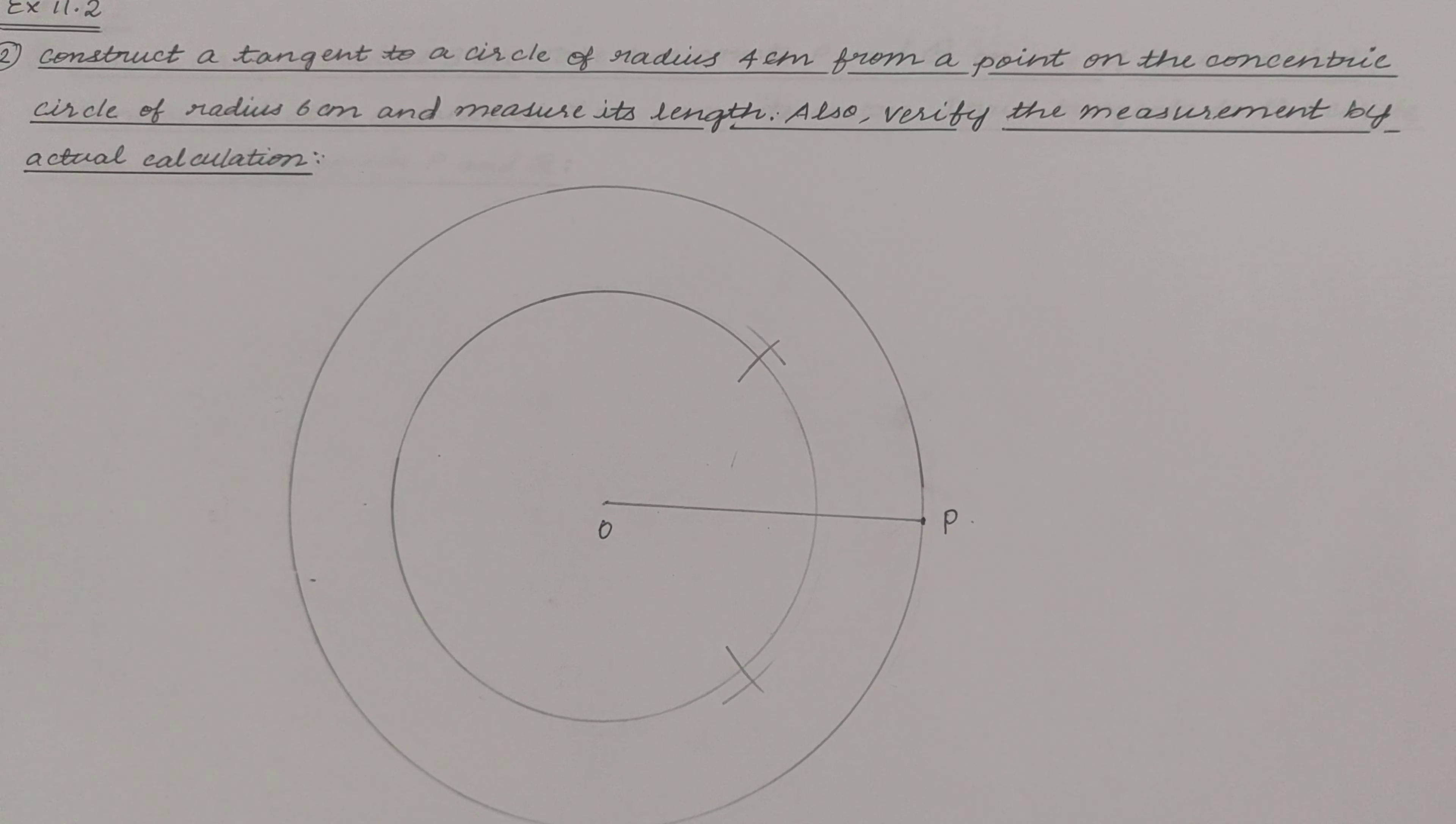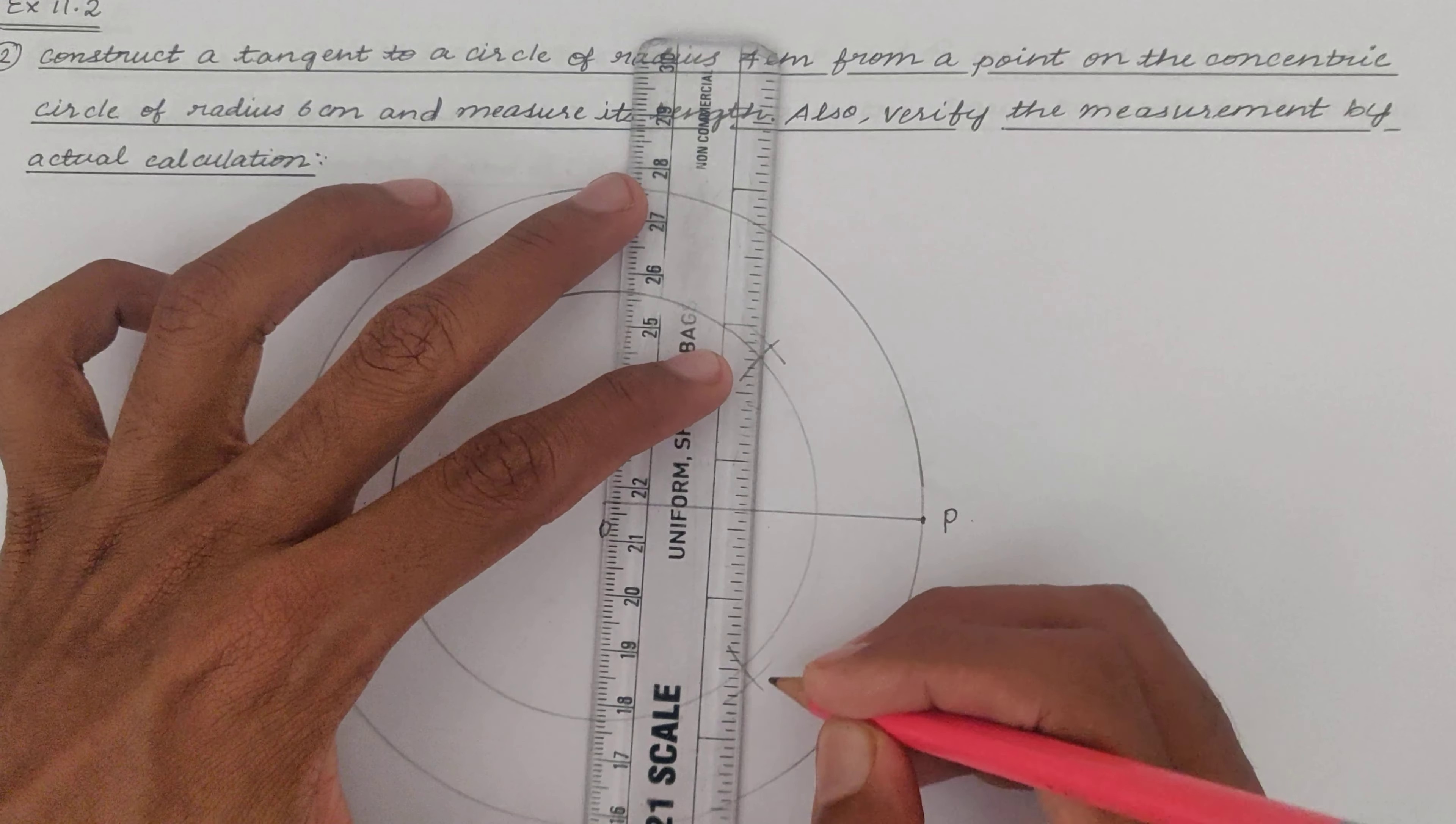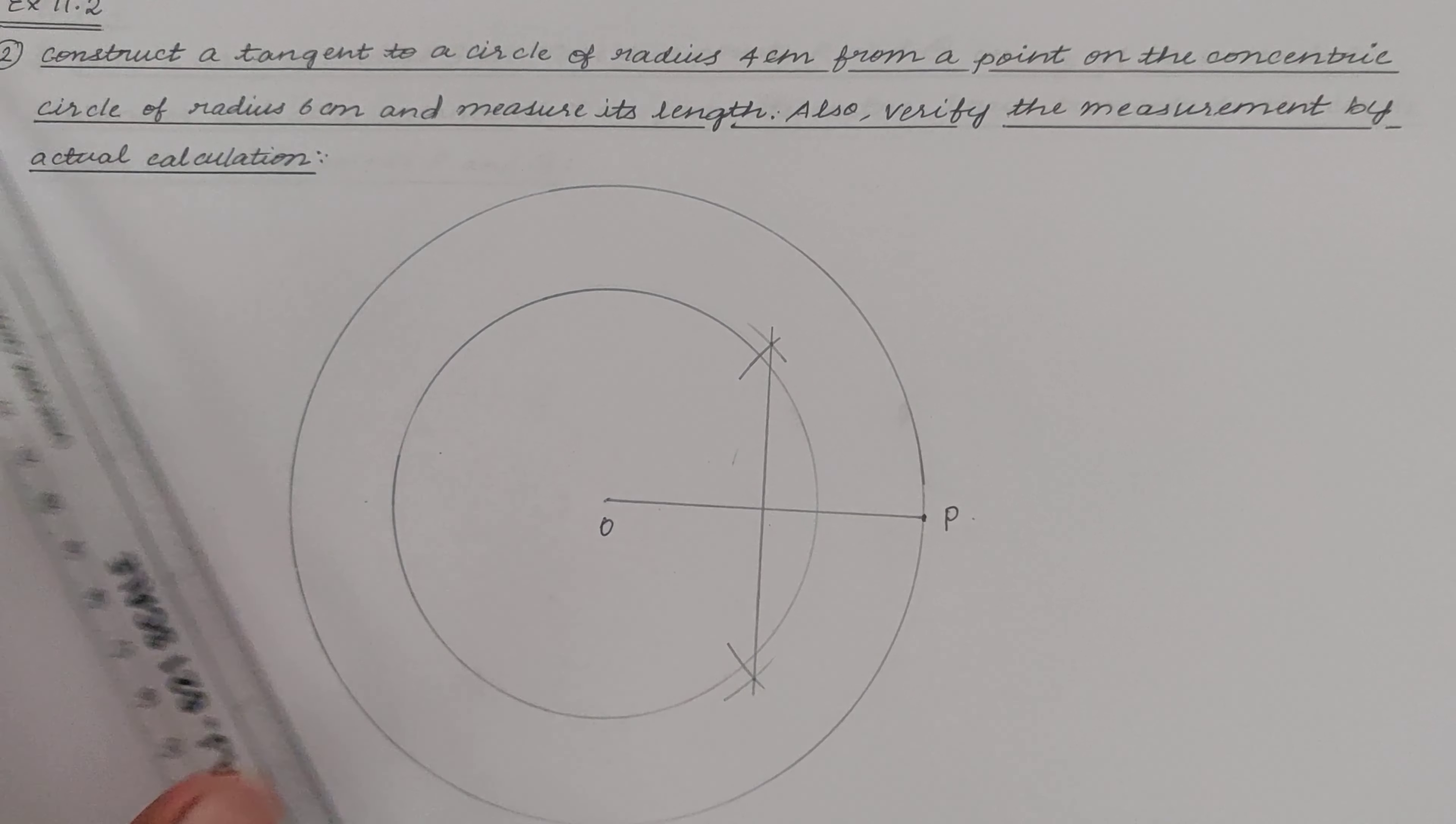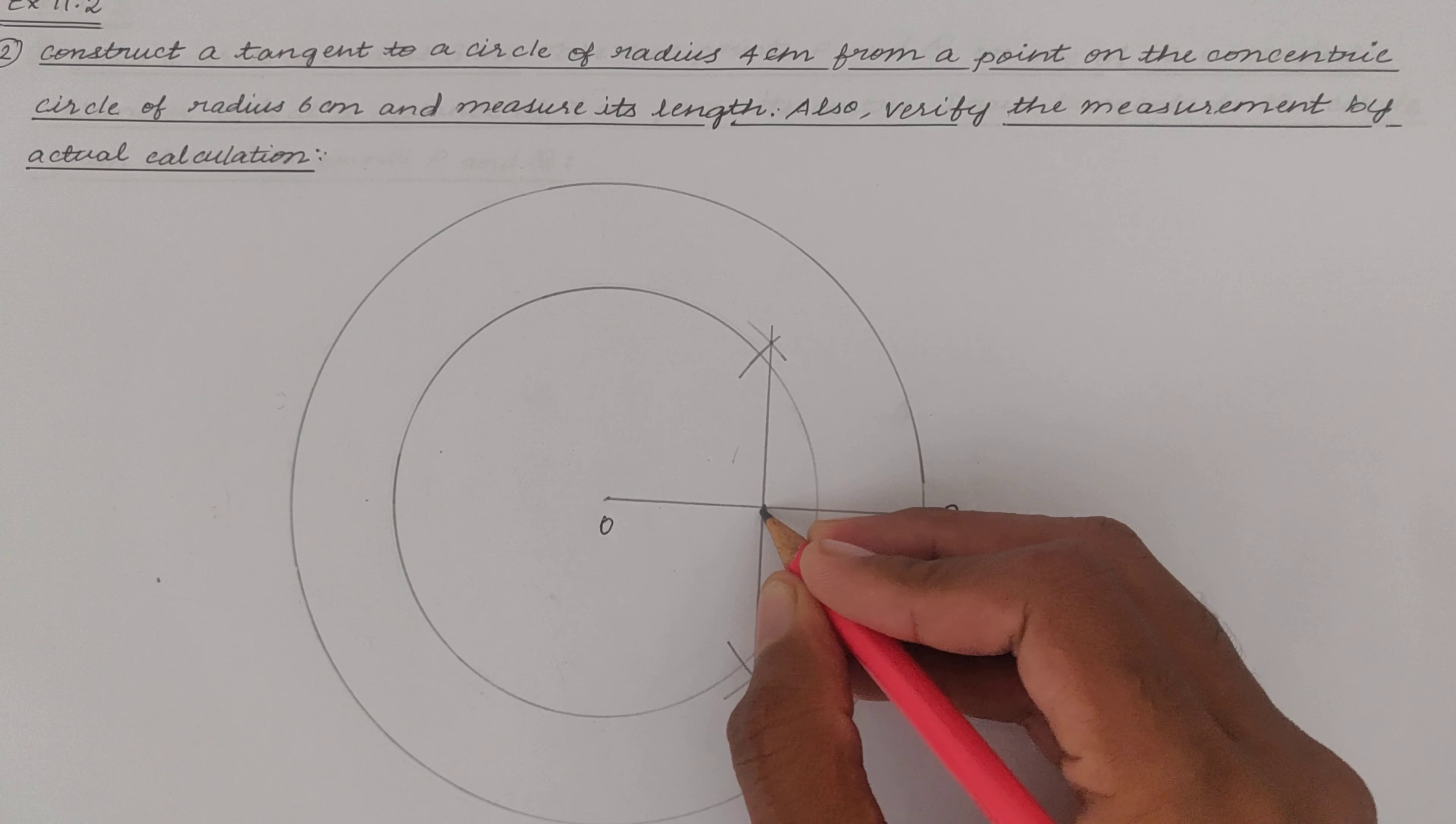This is called the perpendicular bisector. Now the points of intersection needs to be joined. Now we get a point here as you can see.